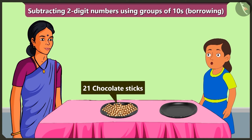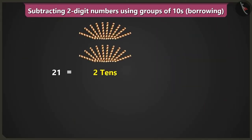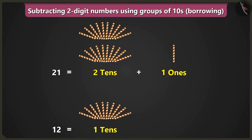So to know this, we will have to subtract from two tens and one ones, twelve, which is one ten and two ones.